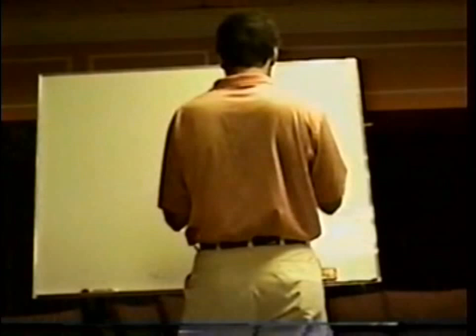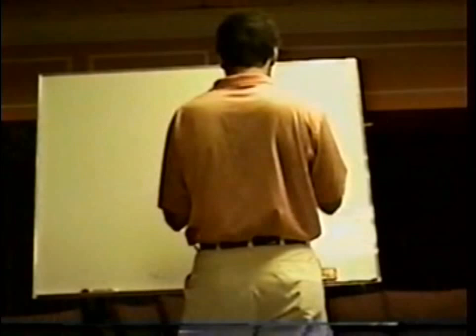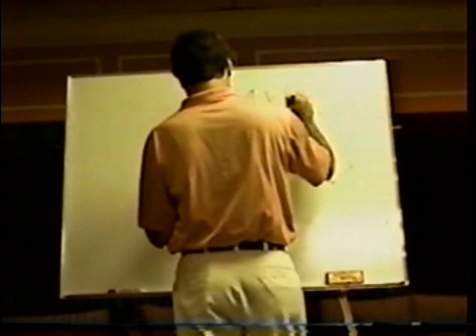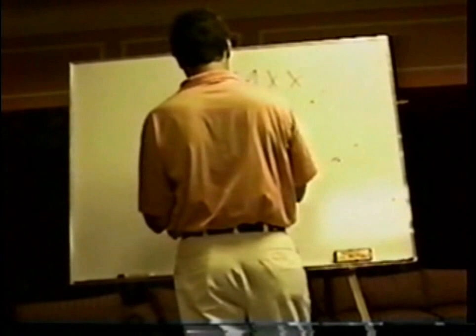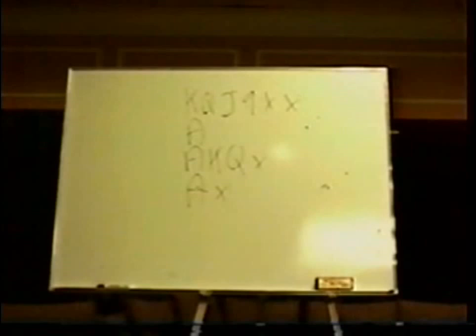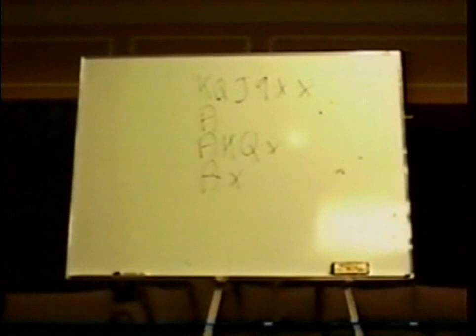This was Judy's hand. This was his wife. This was Judy's hand on the first board of the second half. And Michael, her husband, was the dealer. And they were at favorable vulnerability. And Michael opened the bidding one heart. And this was her responding hand.